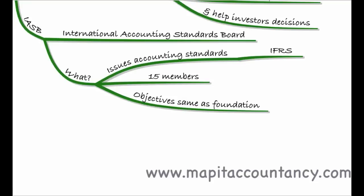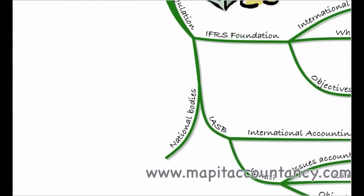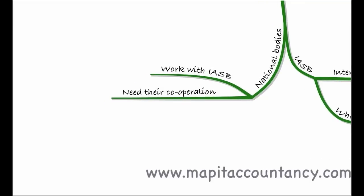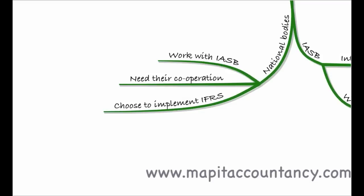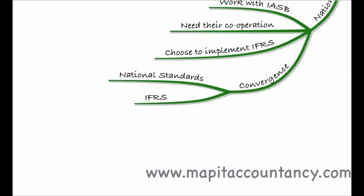National bodies — such as those producing UK GAAP — will work with the IASB, and they may choose to implement IFRS. A lot of national bodies simply implement IFRS now, and there is a global movement for national standards setters to start implementing IFRS, so often the national standards will be very similar or identical. Getting that convergence between national standards and IFRS is a big issue right now. We're pushing towards a global set of standards for comparability so that everybody is preparing accounts on the same basis.